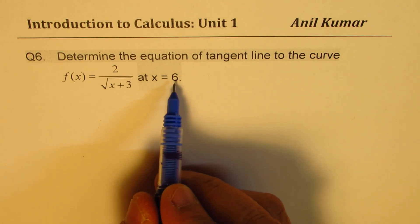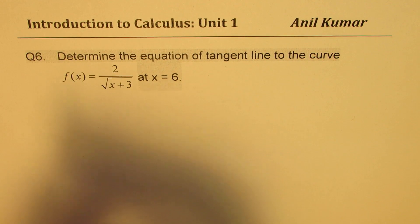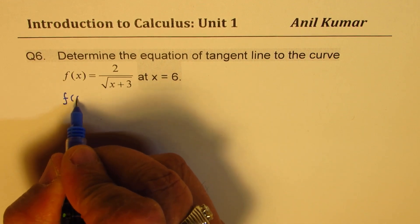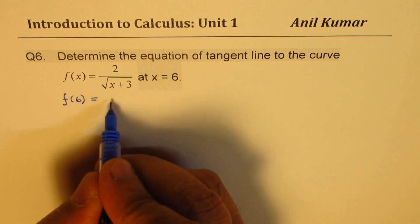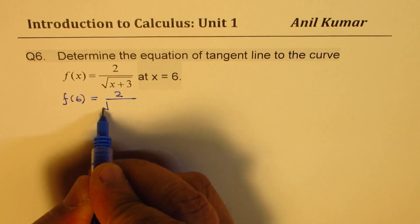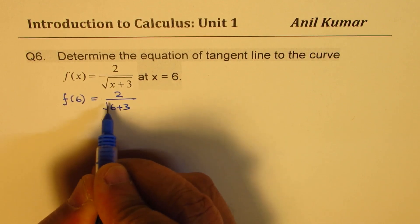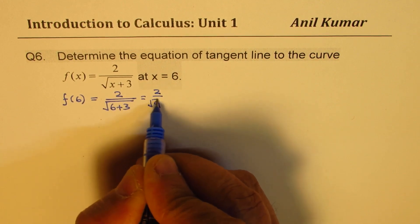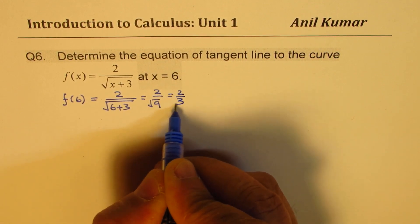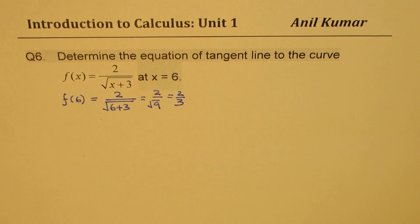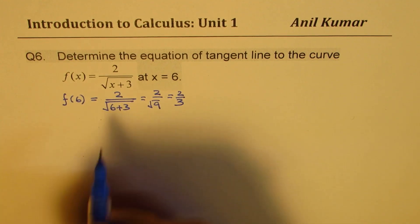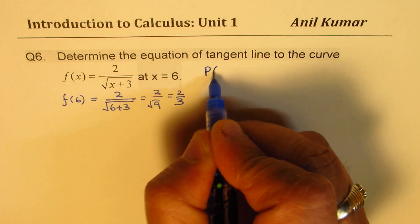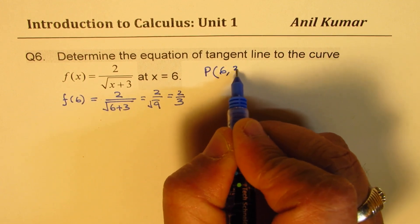Now at x = 6, what is the point? That means what is f(6)? So if I substitute 6 here, I get 2/√(6+3) which is 9, and that gives me 2/√9 or 2/3. So that is the value at 6. That means we have a point which is (6, 2/3).